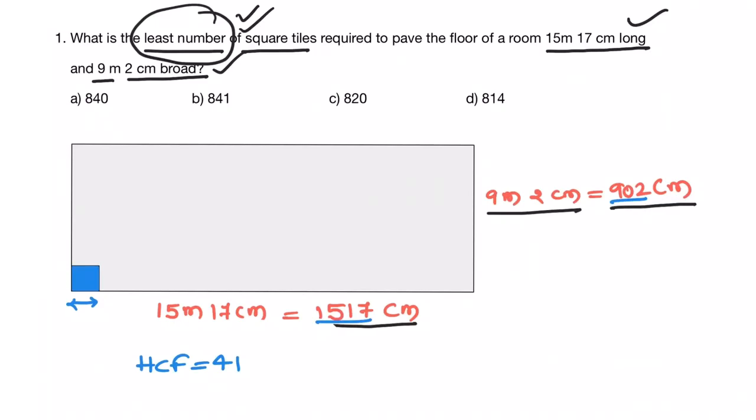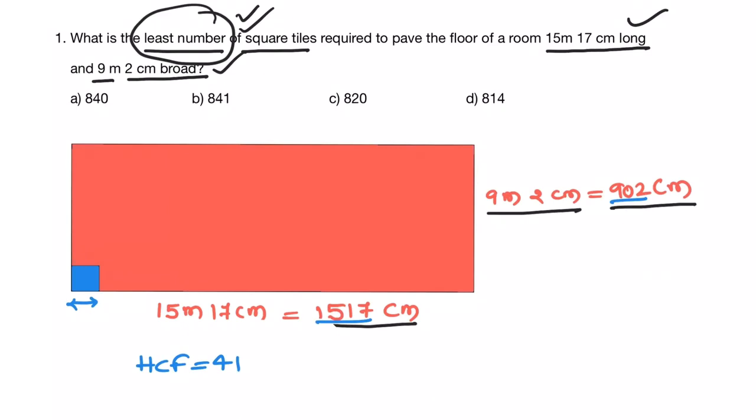Now the least number of square tiles required to pave this floor would be total area divided by area of the square tile. Area of room is 1517 into 902. This is a rectangle, length into breadth. And area of tile, that is a square, is 41 into 41.